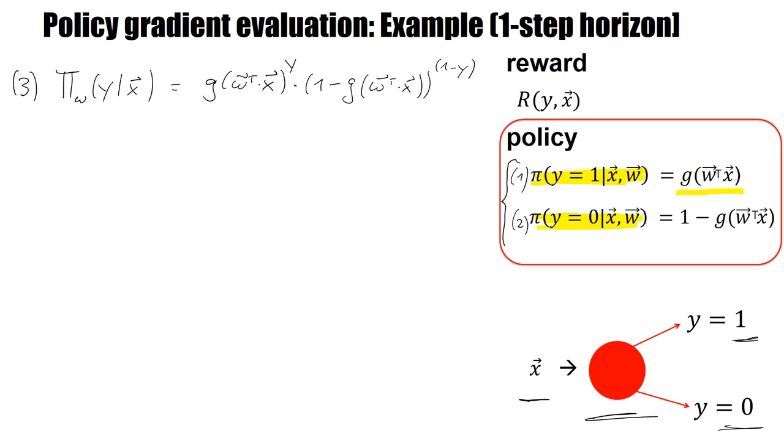Now, we want to use the log likelihood trick. Therefore, I now look at the logarithm of this policy. And the logarithm of something with an exponent y gives just y times logarithm of g. I don't write the argument now. And then I have a multiplication sign here, which translates into a plus sign. And then I have another exponent, which is pulled down. And then it's logarithm of 1 minus g.